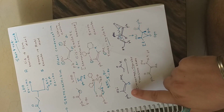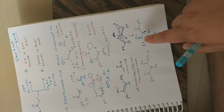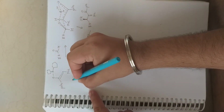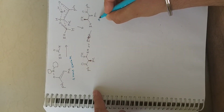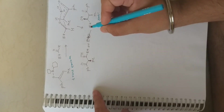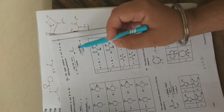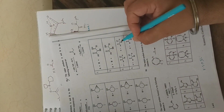Whenever you have a cis enolate you end up getting syn aldol. This is stereoselective — both options are possible. In the second case with trans enolate, you get anti aldol. Both syn methyl-OH and anti methyl-OH options are right because this is stereoselective, not asymmetric. So option A (cis enolate → syn aldol) and option B (trans enolate → anti aldol) are both correct.